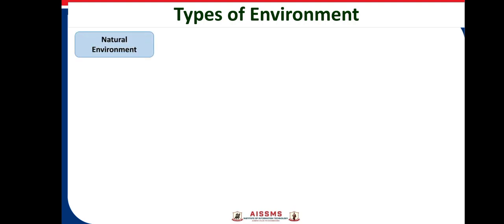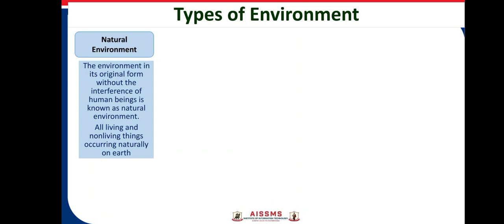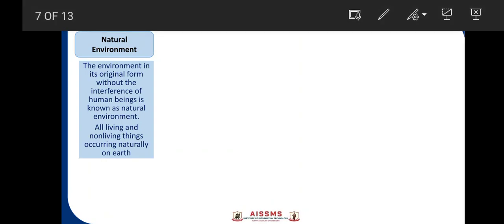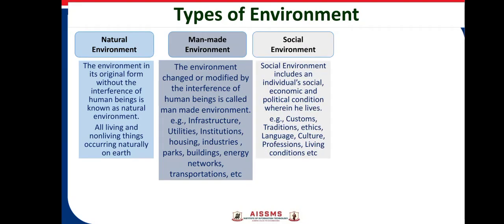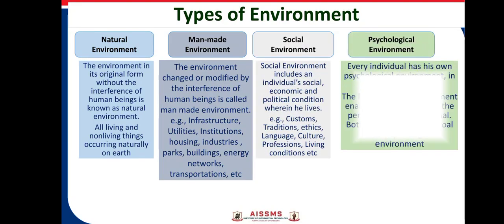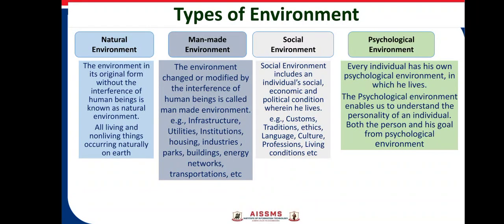The next point is types of environment. There are four main types of environment: natural environment, man-made environment, social environment, and psychological environment. The environment in its original form without the interference of human beings is known as the natural environment. All living and non-living things occurring naturally on earth are examples of the natural environment.